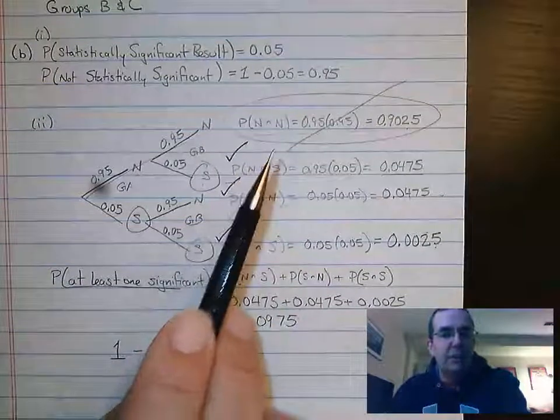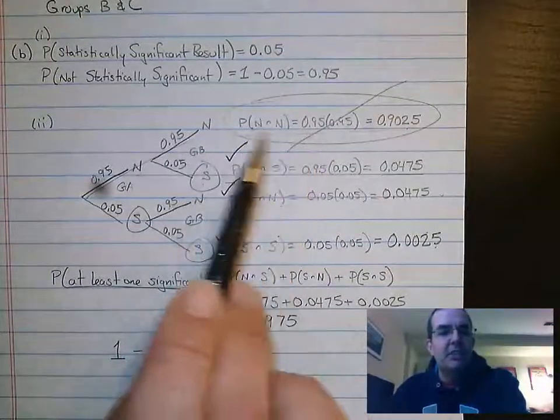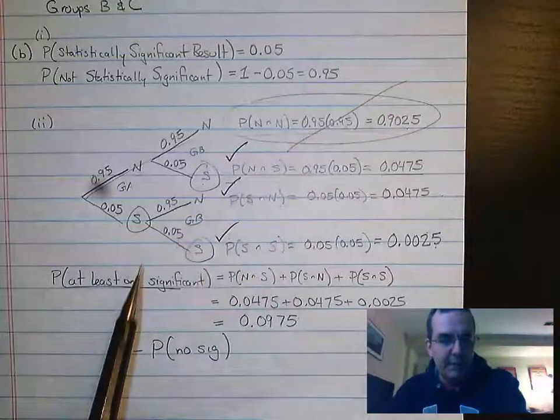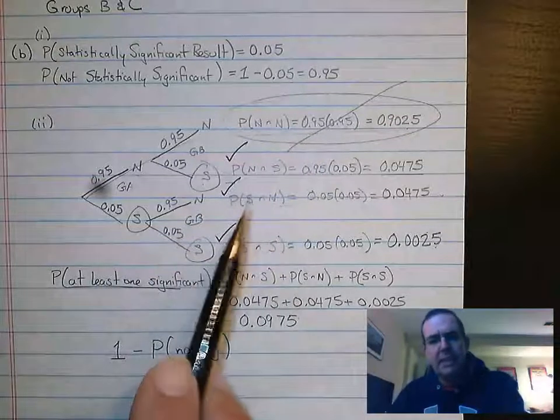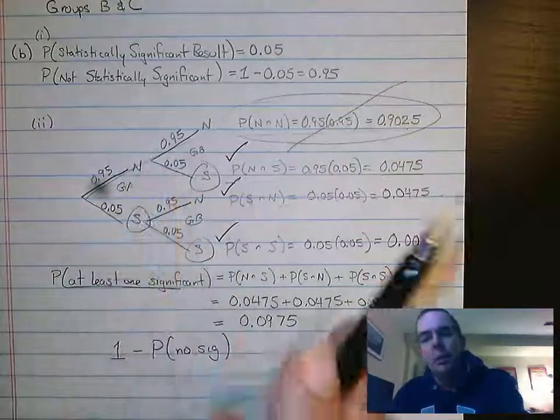I'm going to show you the way that I usually do it. What I did is I realized that this is the only thing we didn't want. Anytime I see at least one, I think of the rule one minus what I don't want.